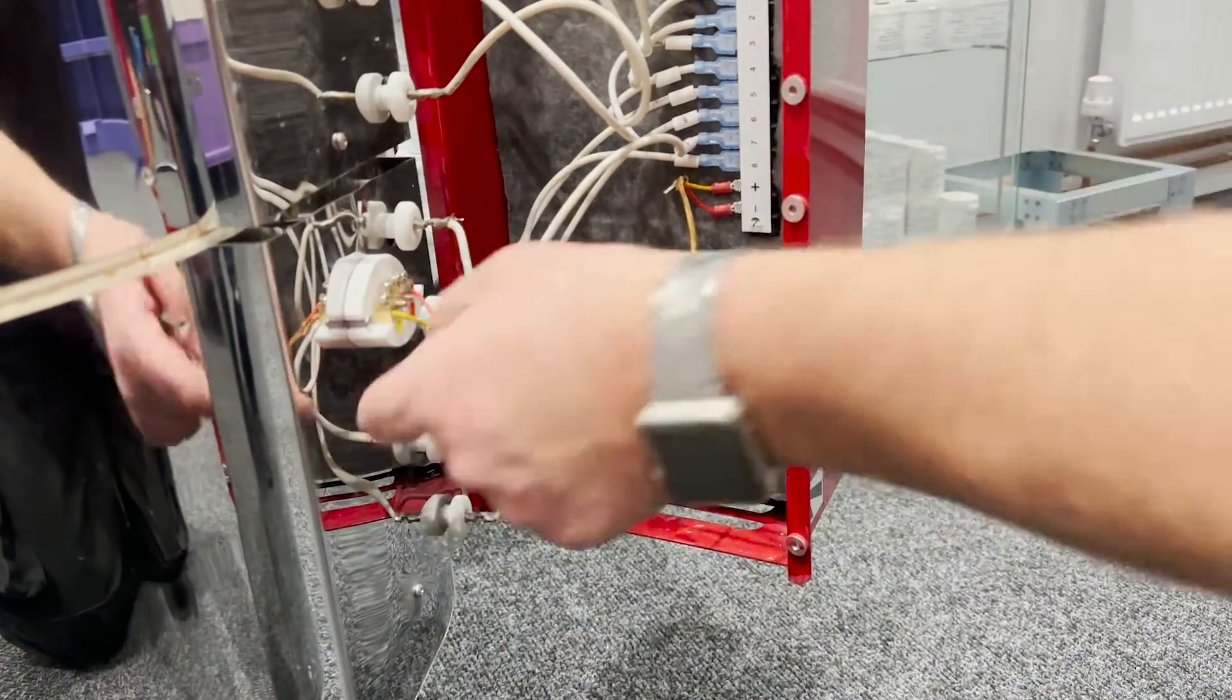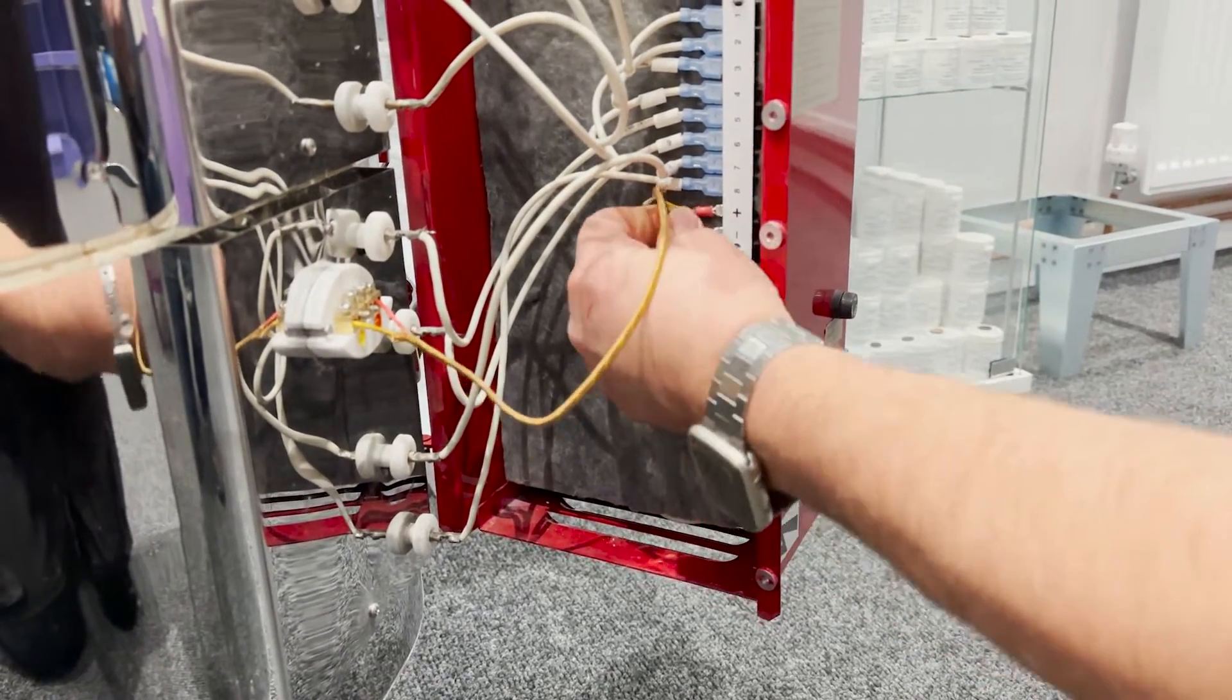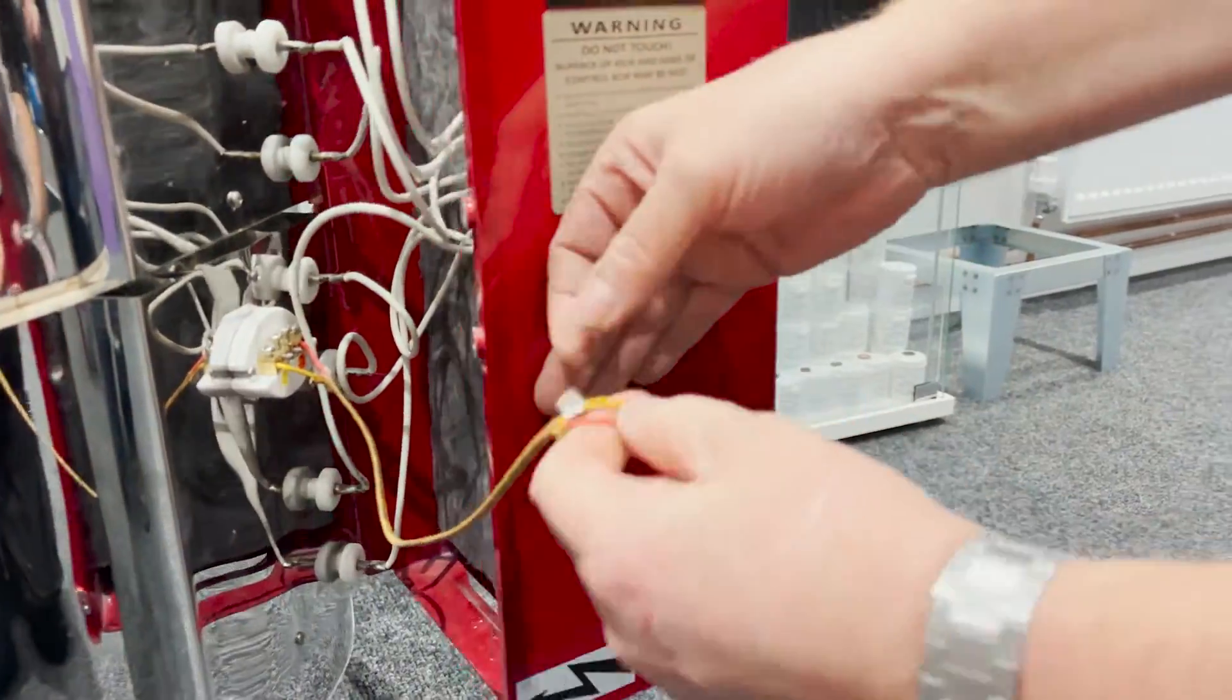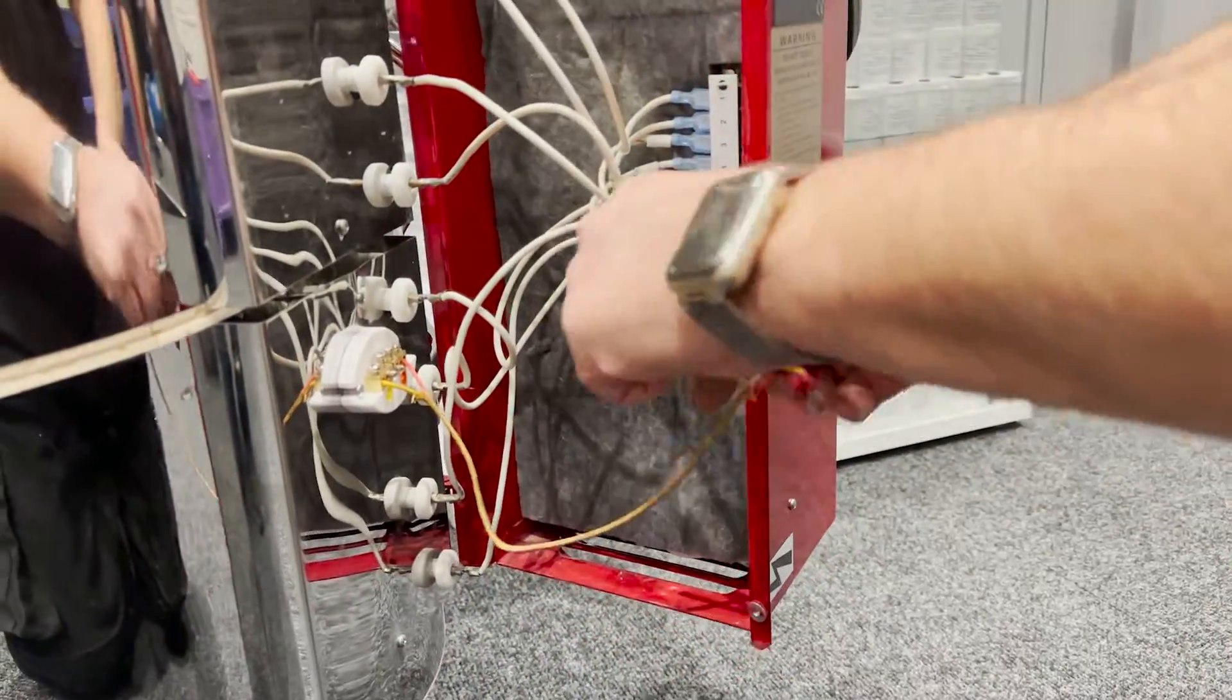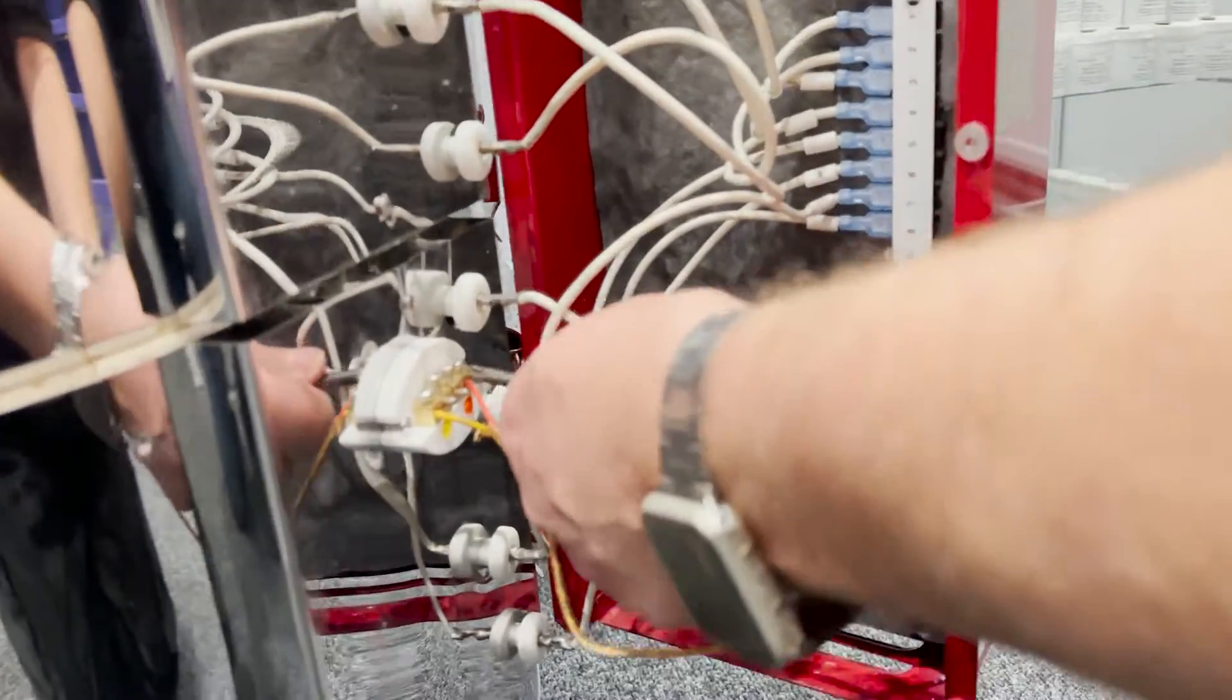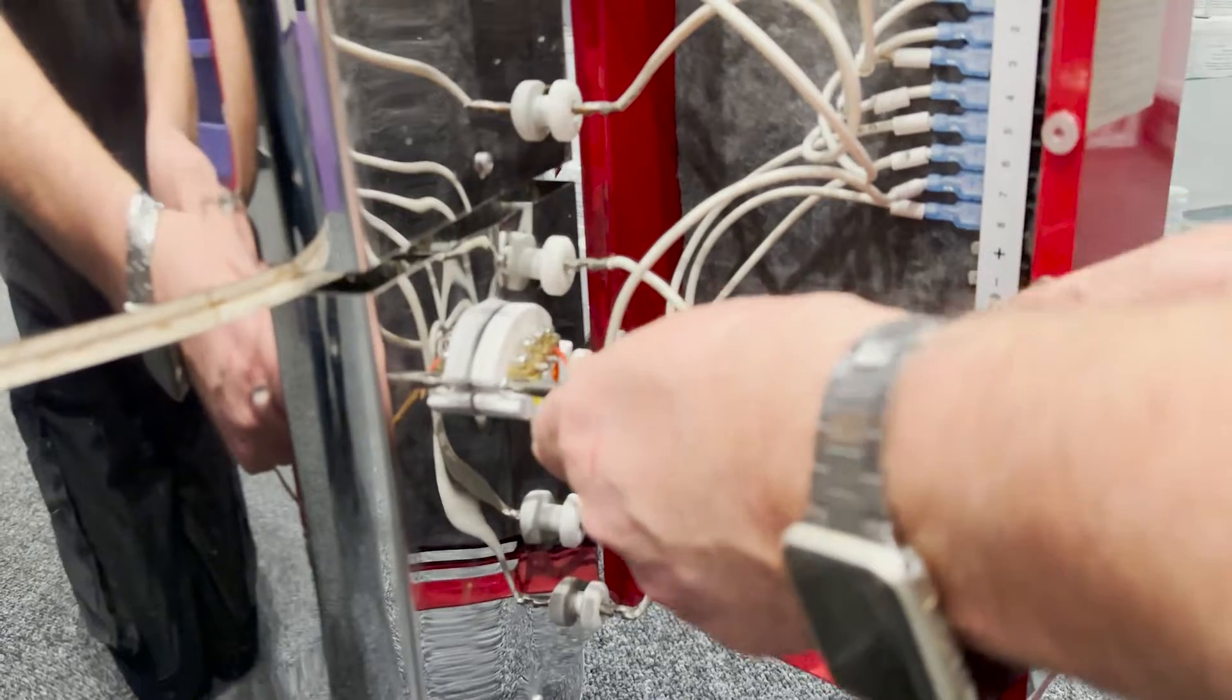Just pull the little spade connectors off the terminal block and then unscrew the two screws holding the thermocouple block in place. You should then be able to just pull the thermocouple out.